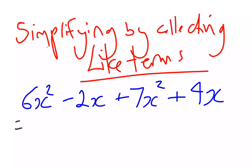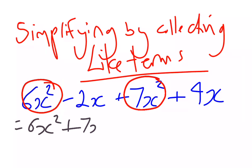So 6x squared and 7x squared are like terms, so we can write those next to each other. The sign in front of the 7 and the 6 is both plus, so that would be 6x squared plus 7x squared.